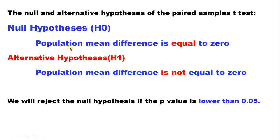This null hypothesis is going to be rejected in favor of the alternative if the p-value is less than 0.05. If the p-value is greater than 0.05, we fail to reject the null hypothesis.